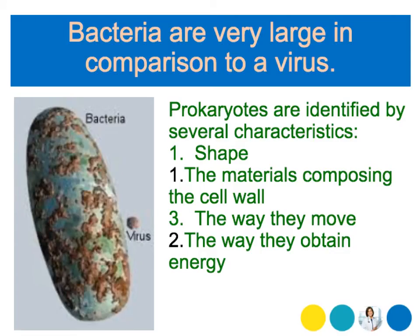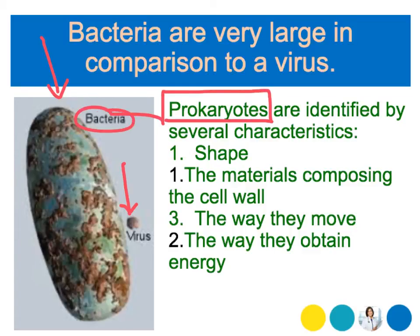Bacteria are very large in comparison to a virus. Our bacteria is huge — we can see them under a microscope — whereas we cannot see a virus under a normal microscope; we would actually have to use an electron microscope. Prokaryotes, our bacteria, are identified by four characteristics: shape, materials composed in the cell wall, the way they move, and the way they obtain energy.